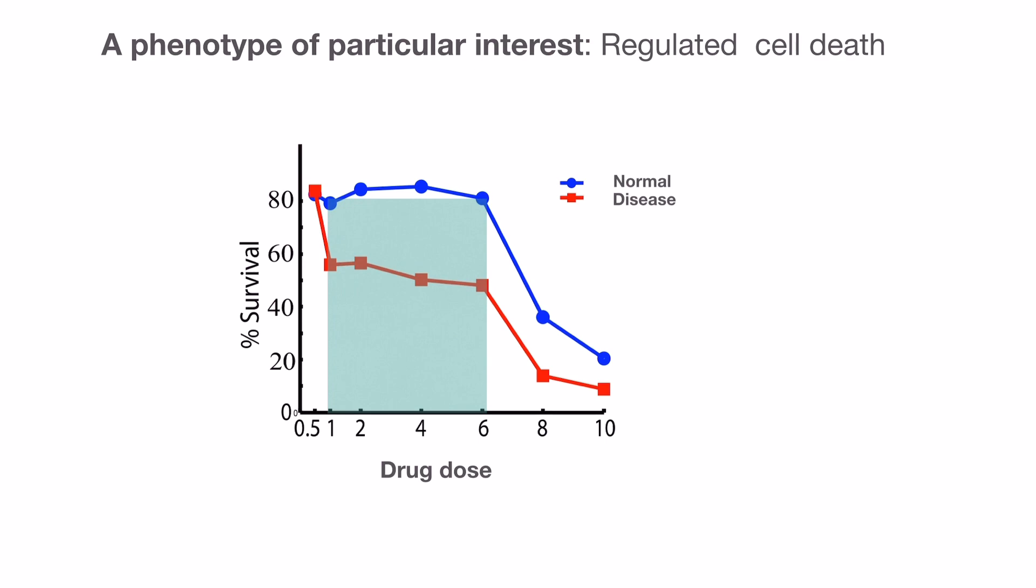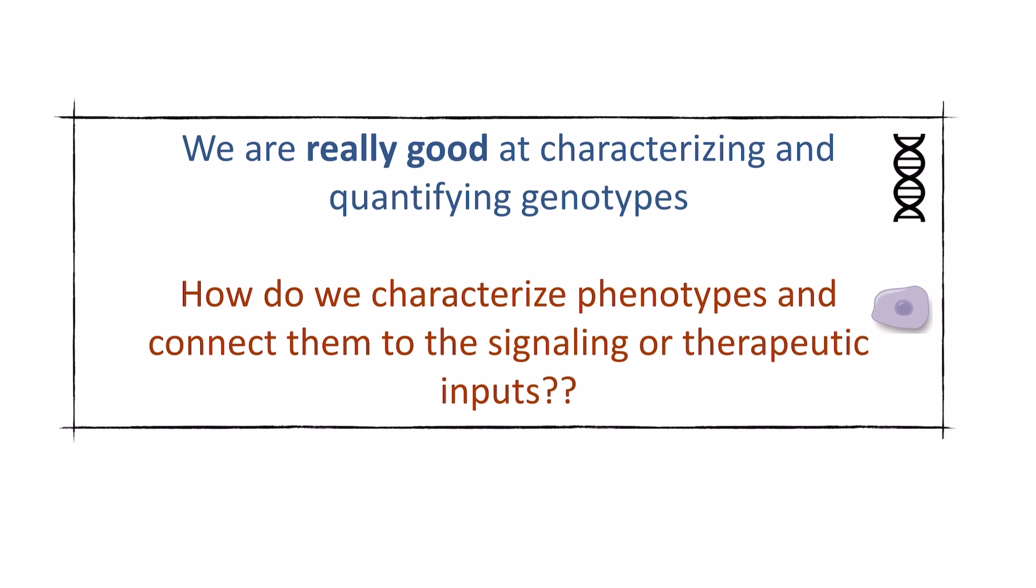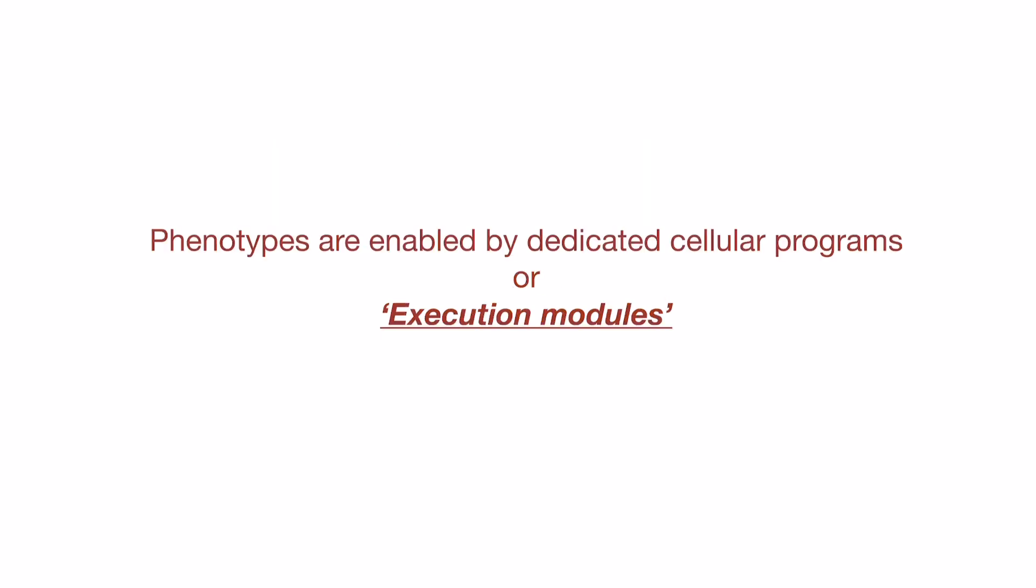So we'd like to really understand how we can find, predictively, such windows as we develop drugs. We're not so good at characterizing phenotypes, especially compared to our progress with genotype genetic analysis. Phenotypic states are much more nebulous. We try to develop different assays, but there's really no standardized way of thinking about this.